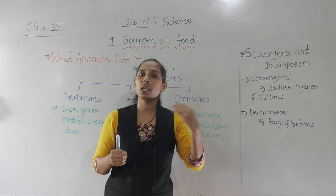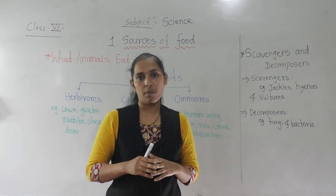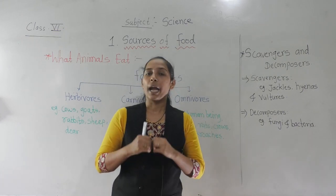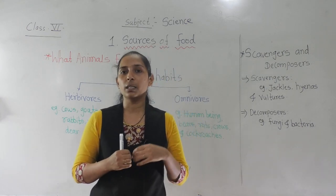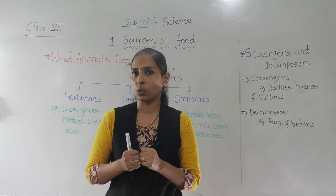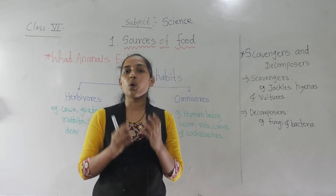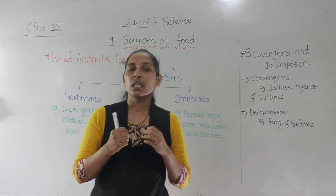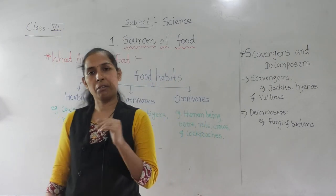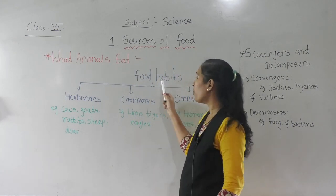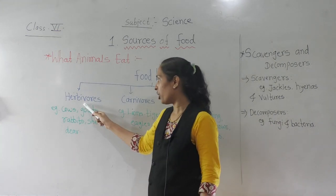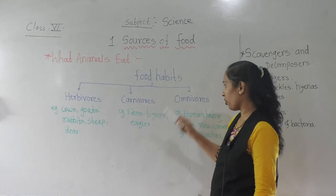Food habits means each and every animal does not have the same food habit. There are certain animals that eat only plants, while certain animals eat the flesh of other animals. And there are certain organisms that eat both plant products and the flesh of animals. Based on their food habits, animals are classified into three groups: herbivores, carnivores, and omnivores.